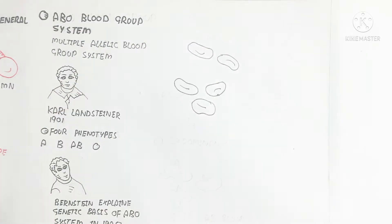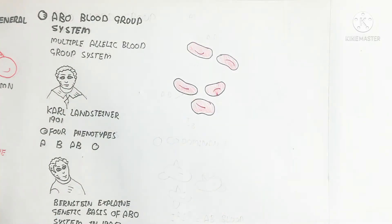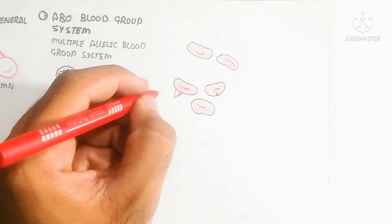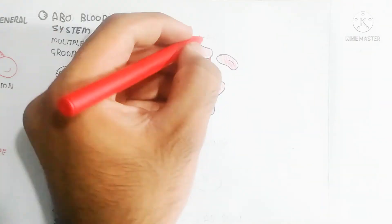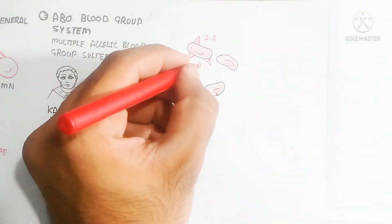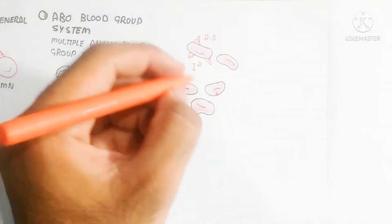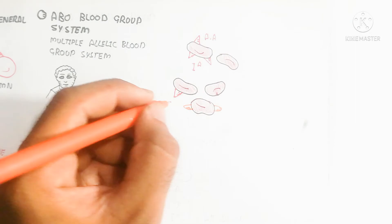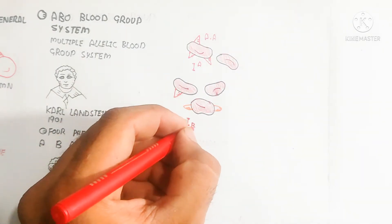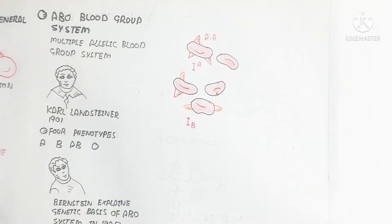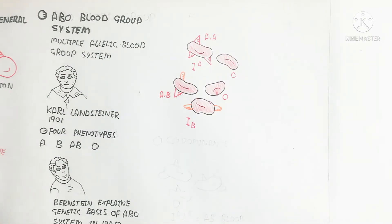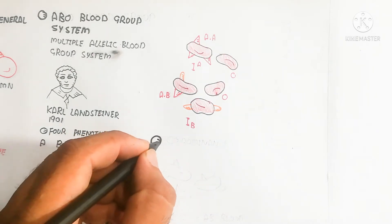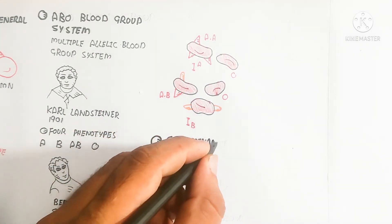On the surface of the red blood cell, we can understand A antigen, B antigen, AB antigen, and neither A nor B antigen, which is known as the O blood group system. Antigens stimulate the production of antibodies against them and cause collapse of red blood cells when a donor and recipient are mismatched.